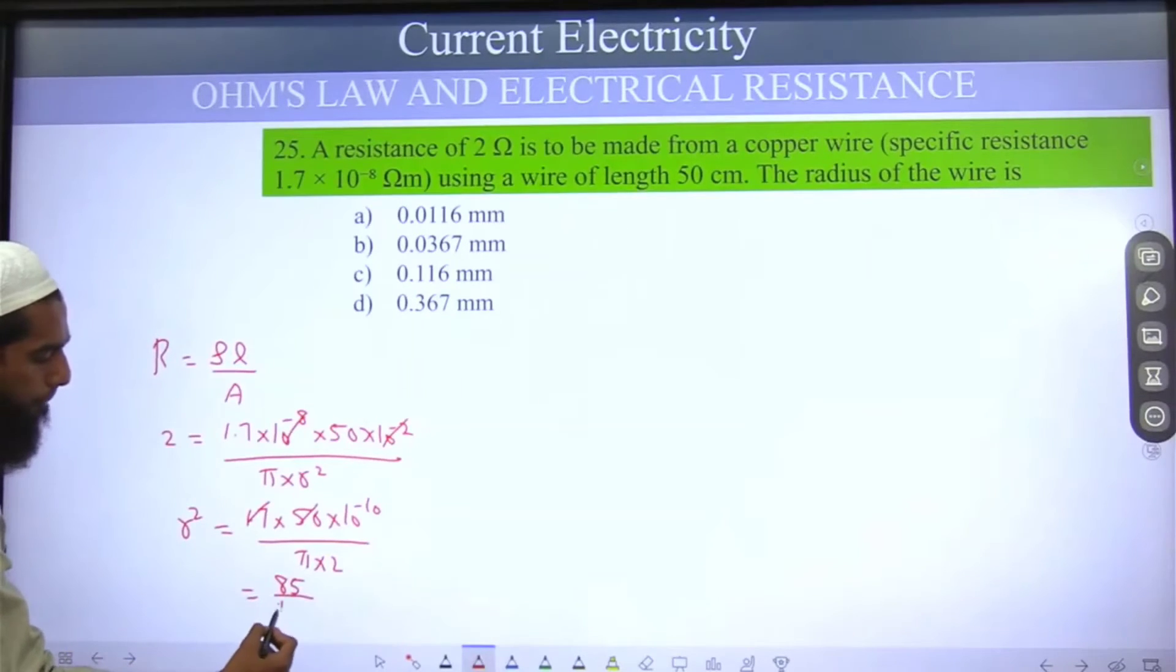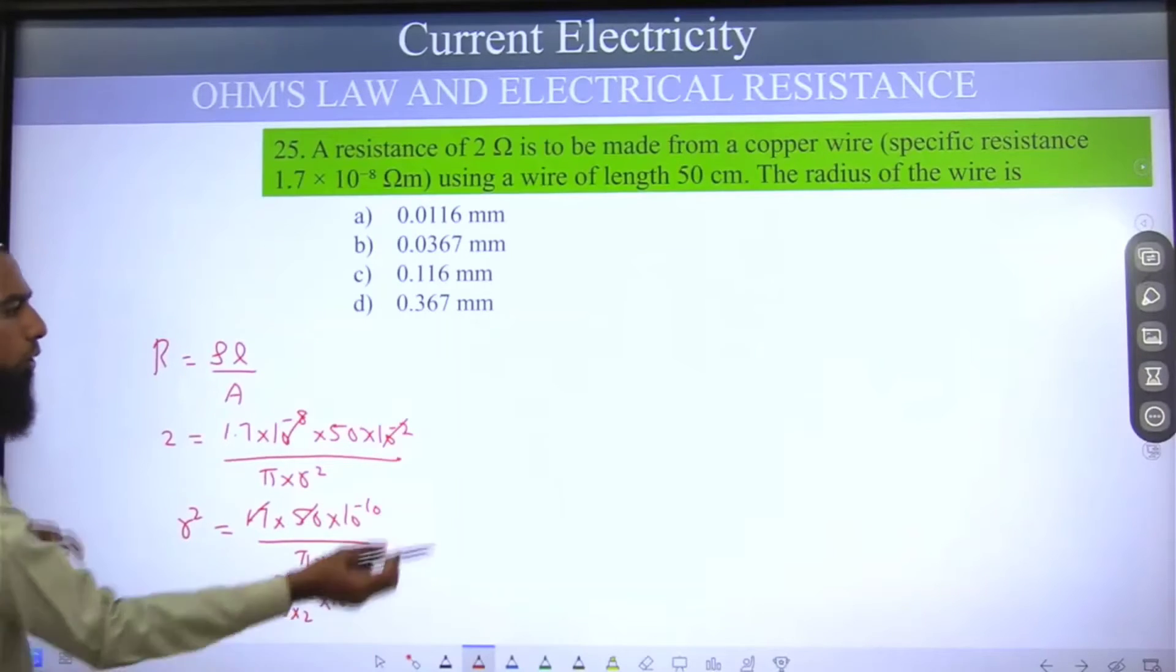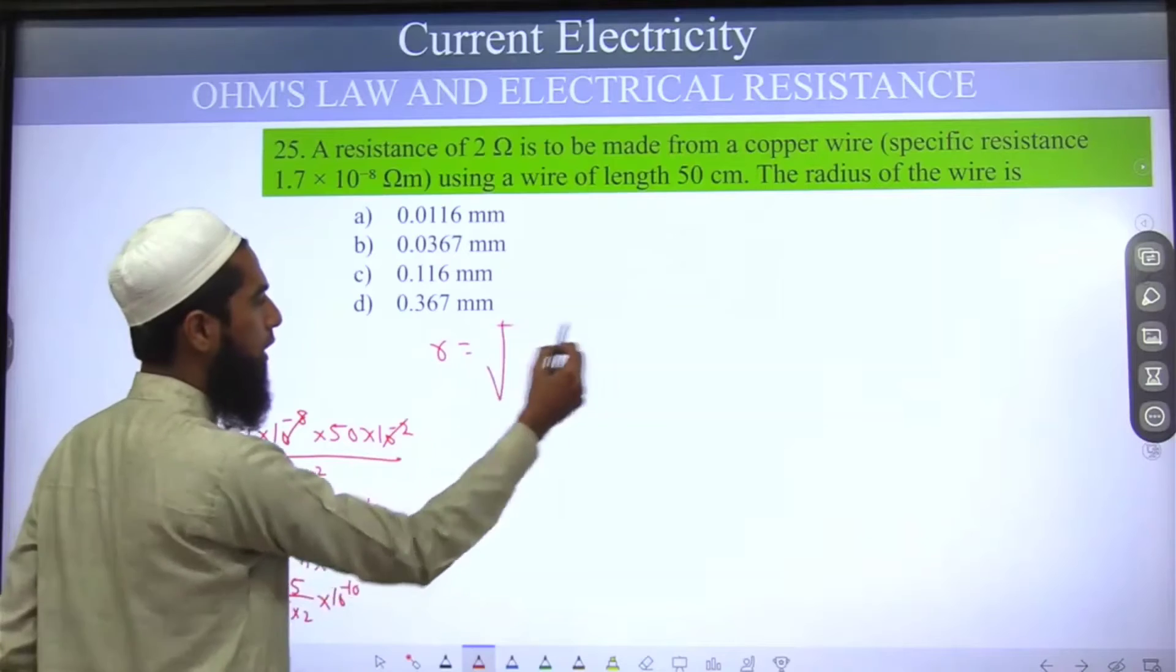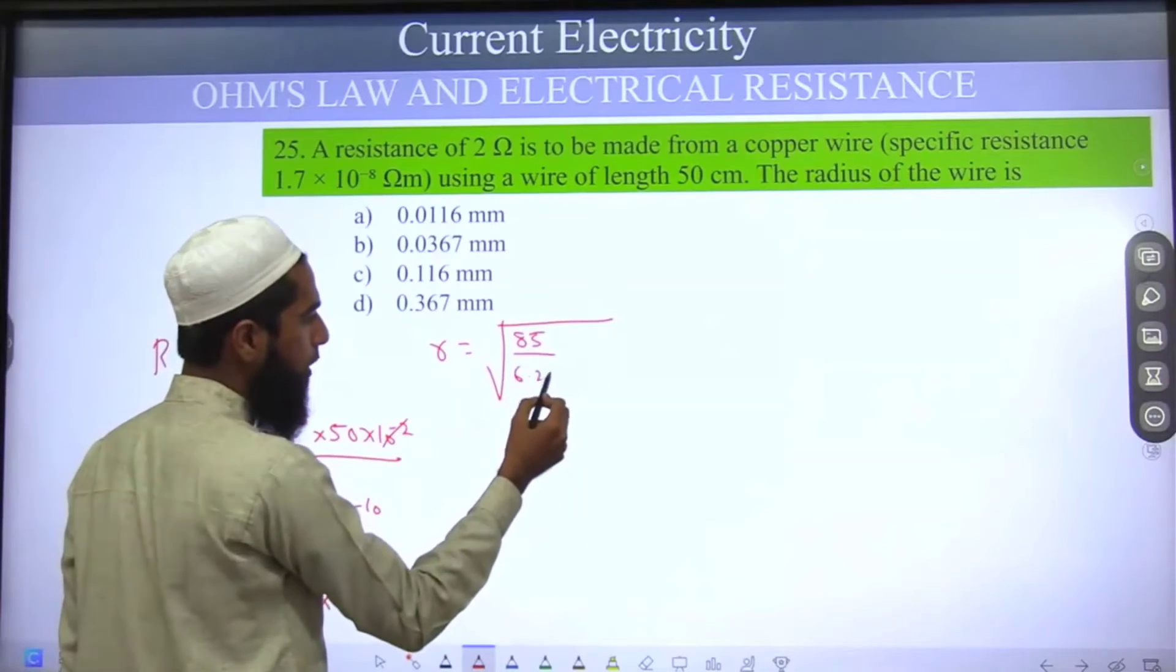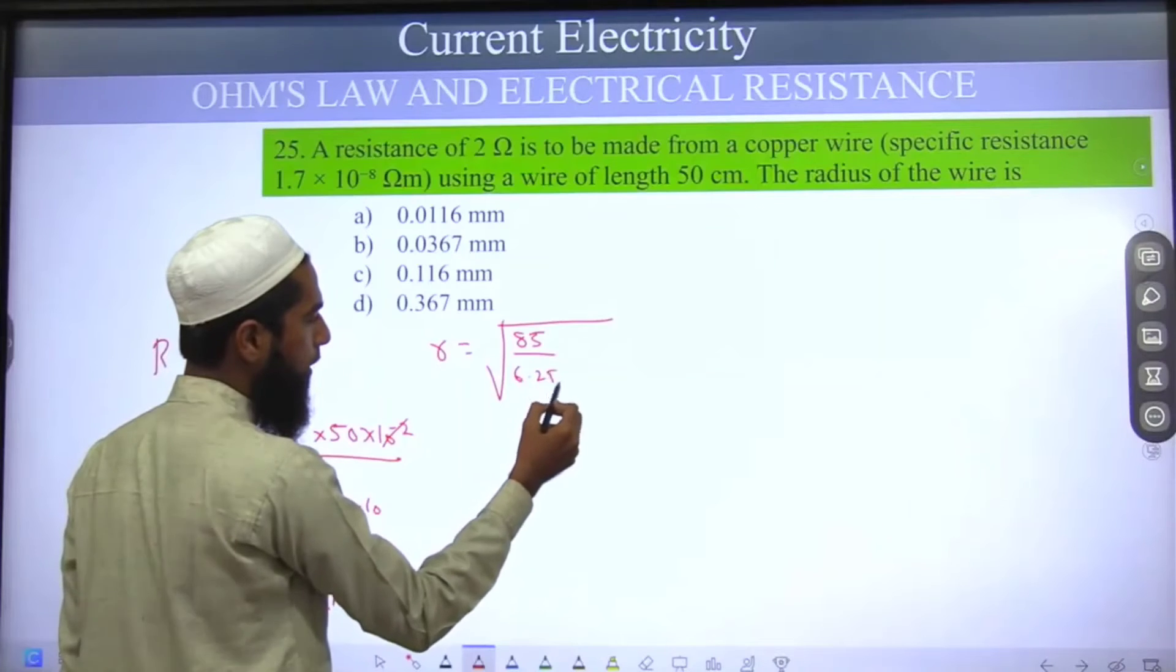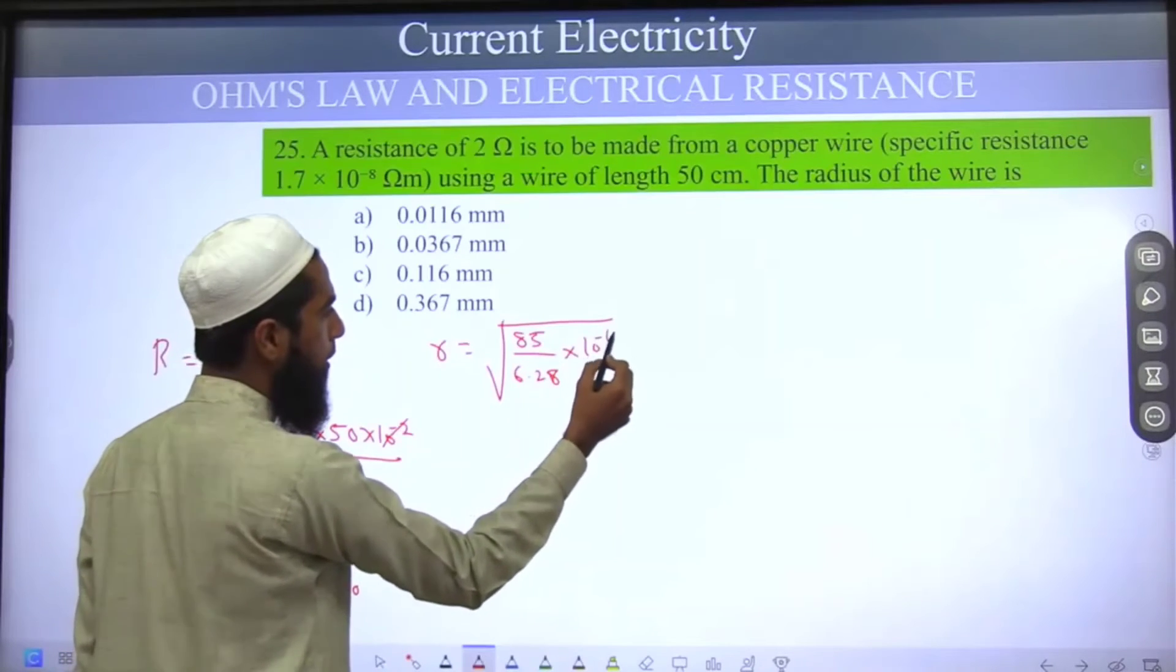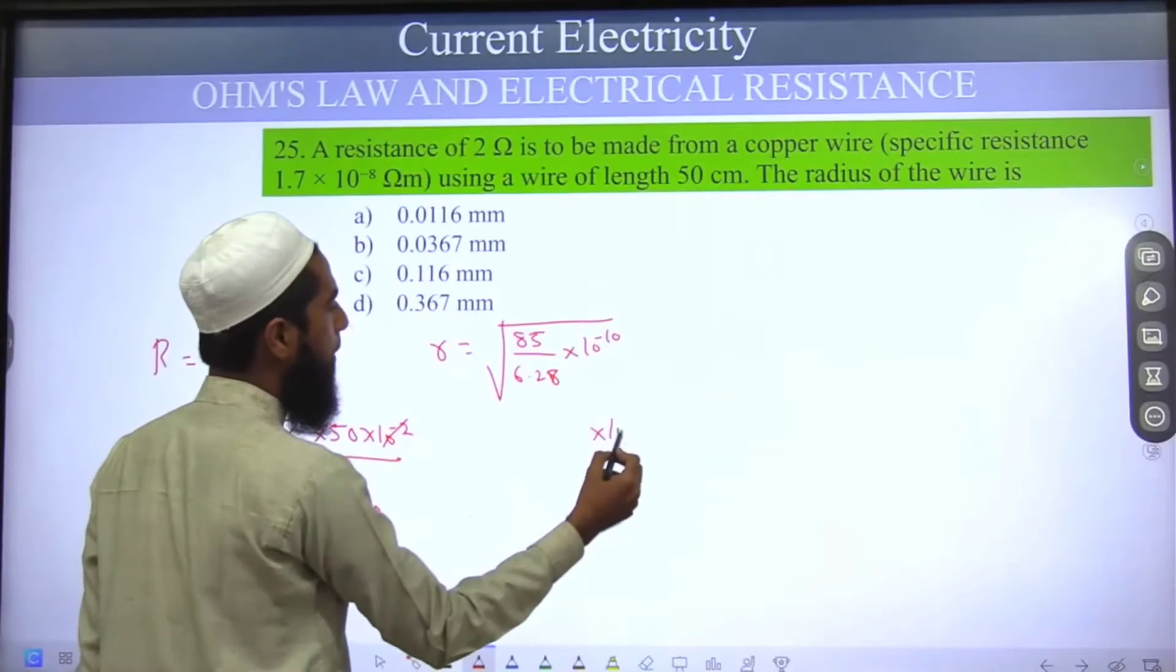So r is equal to under root of 85 upon 6.28 into 10 power minus 10. So 10 power minus 10 becomes 10 power minus 5.